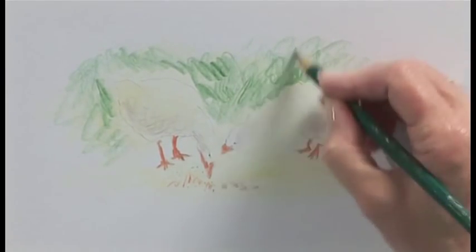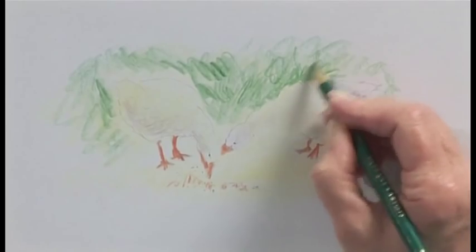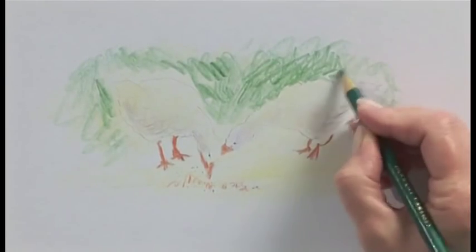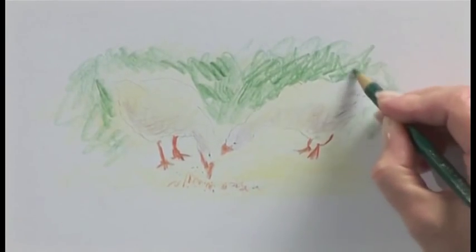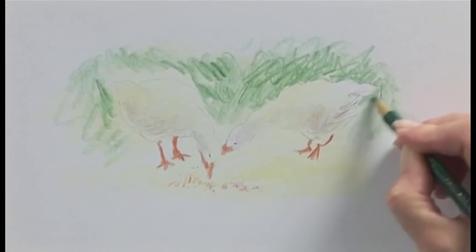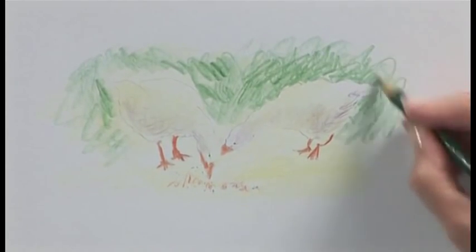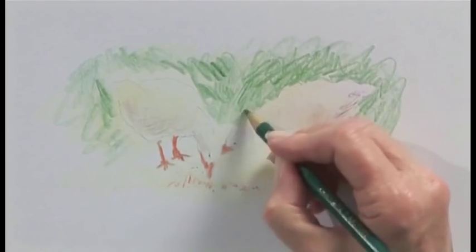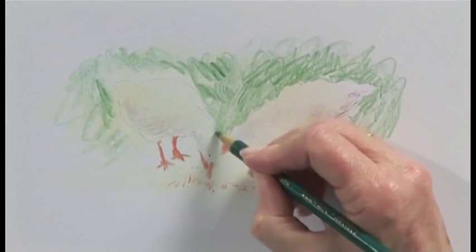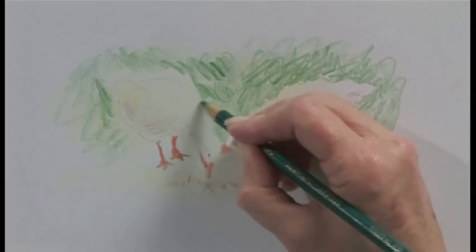Now I do have to go up to the pencil line because this is what's going to make the ducks look like a nice neat light shape against the dark background. So this is the scribble technique that we did which is going to look like foliage in the background. Ever so simple, pencil flat on the paper.